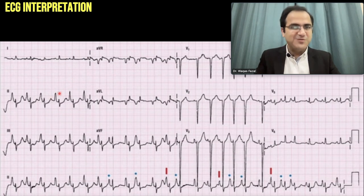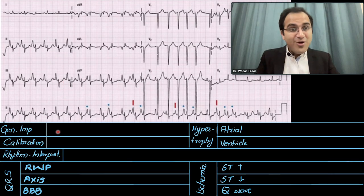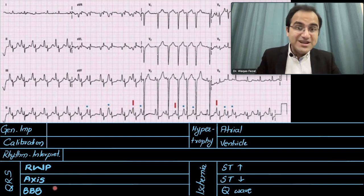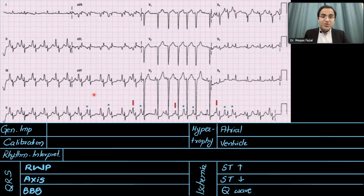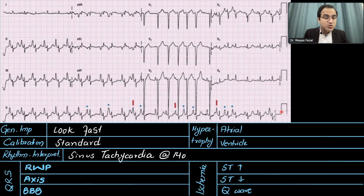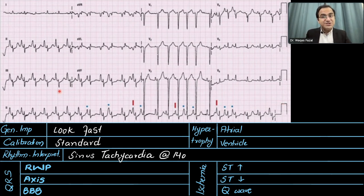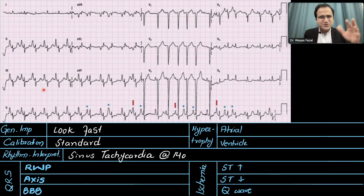Now we will practice some ECGs. In this ECG, there are clear-cut tall peaked P waves. We will solve the ECG by the six-step method. Coming to the general impression, the ECG looks fast. Looking at the calibration, it should be two large boxes tall and one large box wide, which is the case — so it is a standard calibration. The ECG is being printed at 25 mm per second, which is standard.